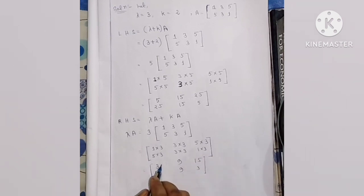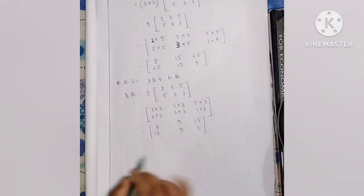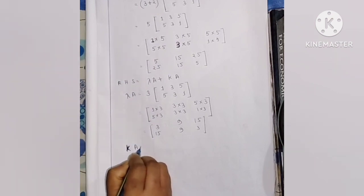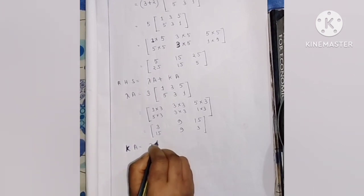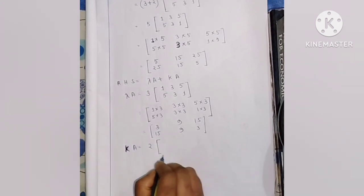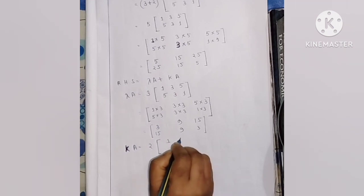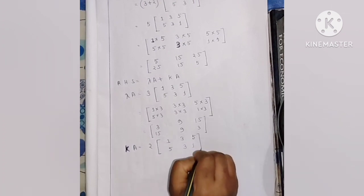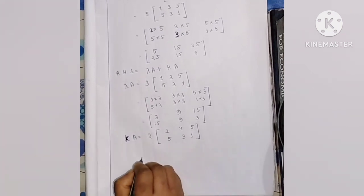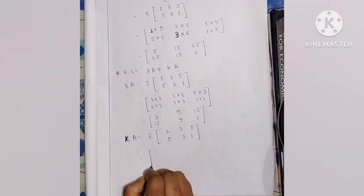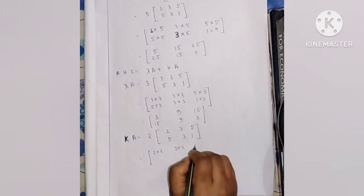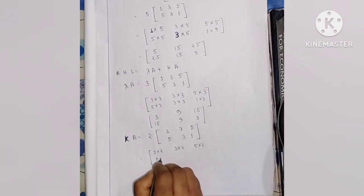For the right-hand side, first compute lambda A: lambda equals 3 and A equals [1, 3, 5; 5, 3, 1]. Lambda A gives [3, 9, 15; 15, 9, 3]. Then compute k A: k equals 2 and A equals [1, 3, 5; 5, 3, 1]. That gives 1 into 2, 3 into 2, 5 into 2, 5 into 2, 3 into 2, 1 into 2.